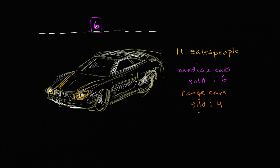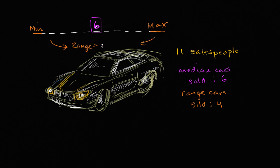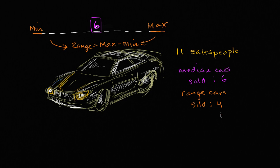The other thing we know is that the range of cars sold is four. The range is the maximum number of cars sold minus the minimum number of cars sold. If we've sorted them all out, this is our max and this is our min, so our range is going to be max minus min. Range equals maximum minus minimum, and they're telling us that is four. So the difference between the most productive and the least productive salesperson is four.